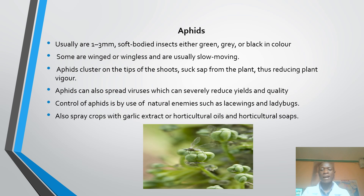Some of them have wings, others are wingless and therefore they are slow moving. Aphids cluster on the tips of shoots and have a harmful effect on the plant whereby they suck sap from the plant, thus reducing the plant's vigour. These aphids also cause harm to plants by spreading viruses which severely reduce the yields and quality of the plant.